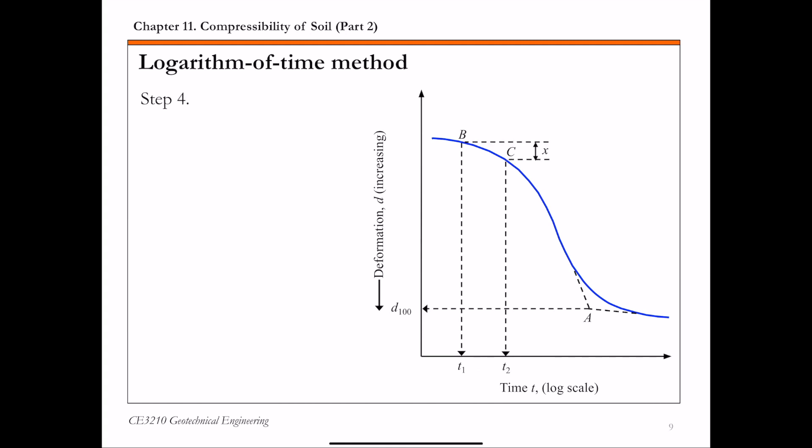In step four, draw a horizontal line, dE. This dE horizontal line is at a distance x, which is determined from step three, above point B.